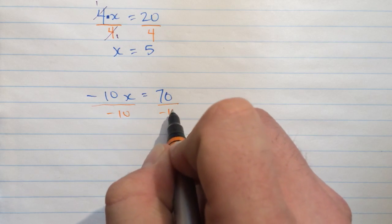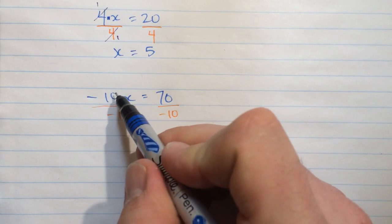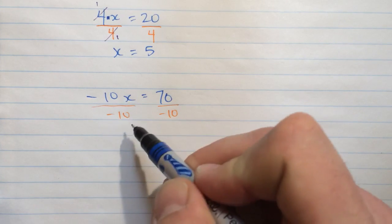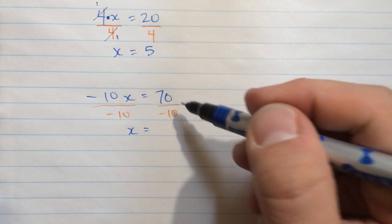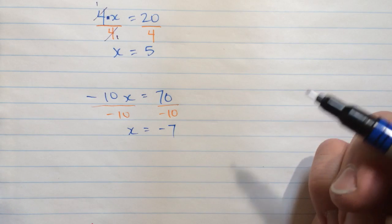And I'll have to do that to both sides of the equation to balance this in order for this to be true still. And so negative 10 times x divided by negative 10 is going to be just x. Over here, 70 divided by negative 10 is negative 7.